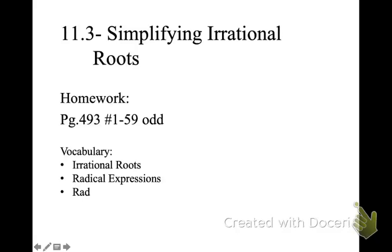Okay, ladies and gents, today we are doing section 11.3. This is simplifying irrational roots, also known as simplifying radical expressions. So far we have learned how to estimate radicals — to the nearest tenth, to the nearest hundredth — and we learned how to simplify a radical with a variable. Now we're looking at simplifying radicals with irrational roots, so non-perfect squares. This is by far the most used and most accurate method.